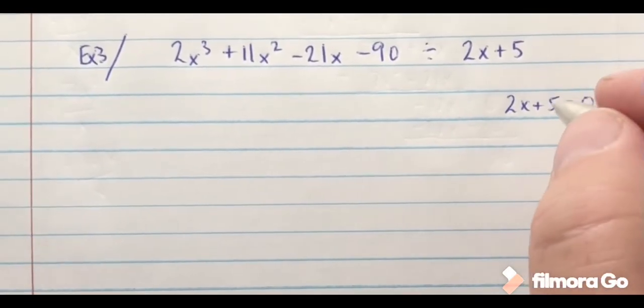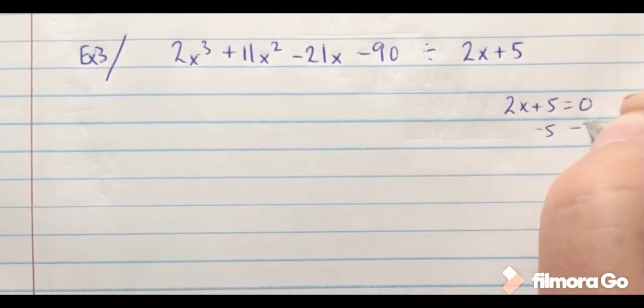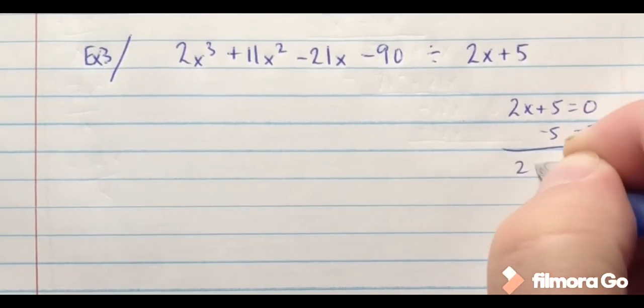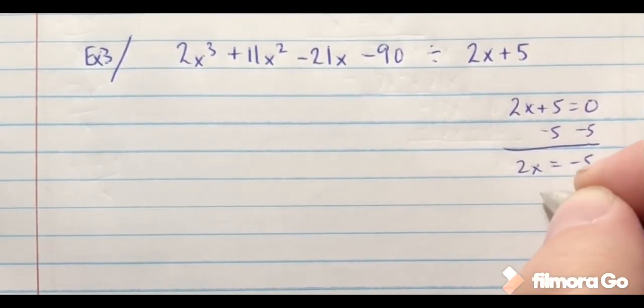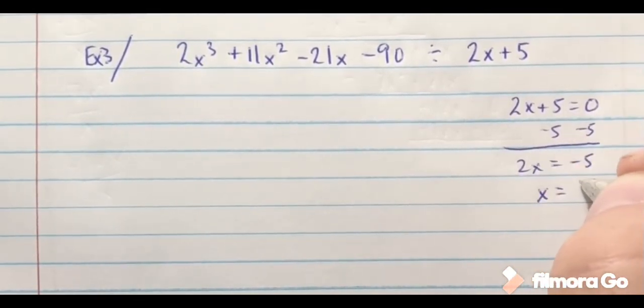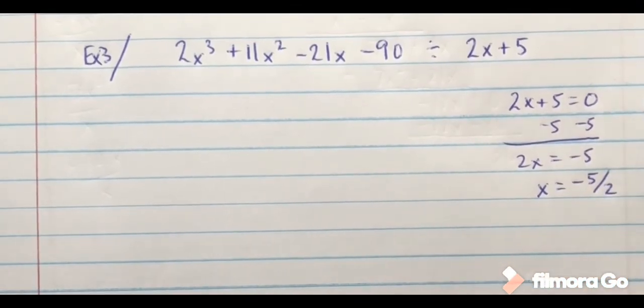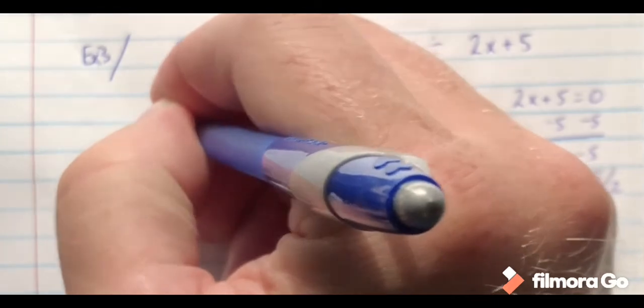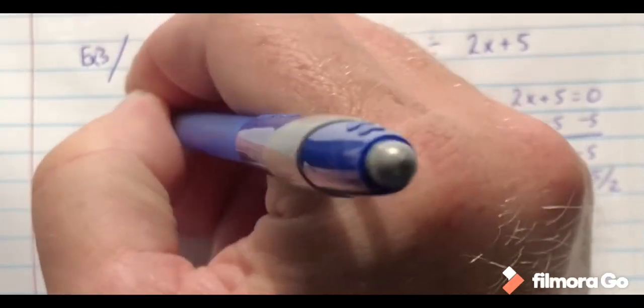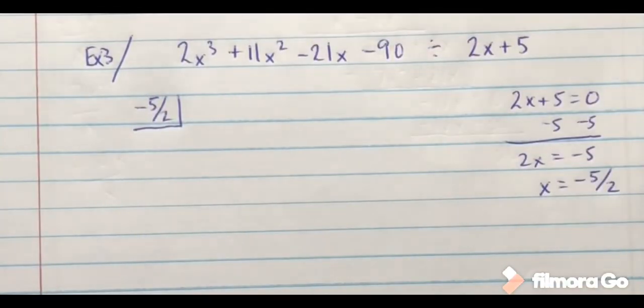So in this case I subtract 5, I get 2x equals negative 5. So x in this case, when I divide by 2, is actually negative 5 over 2. So again this is one where I've got a fraction in the box.